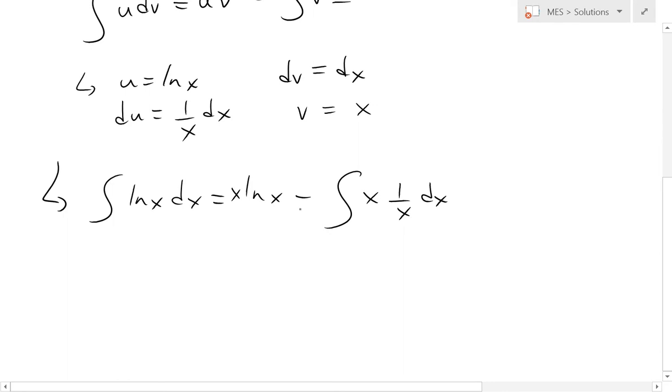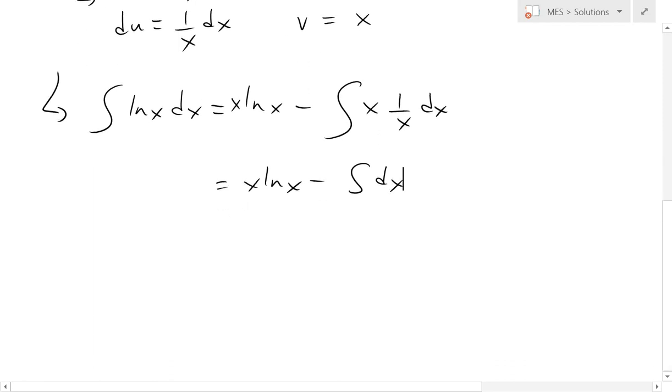So when we plug that in, as you can see, in this case, x ln x minus, now this cancels. You get the integral of just dx right here. So this is the same thing as just ignoring the 1.